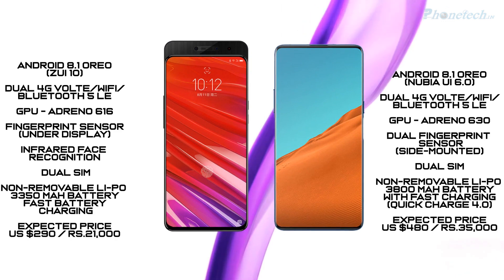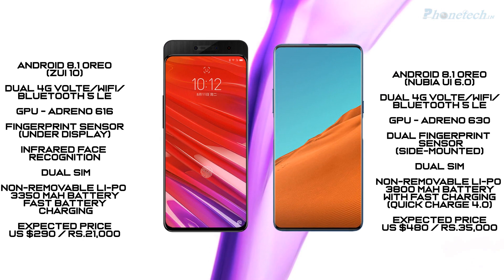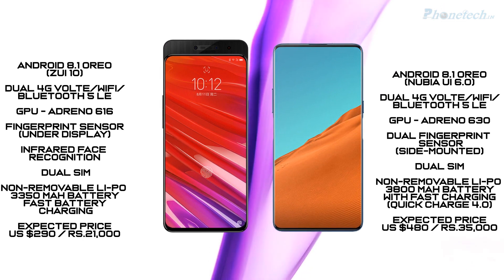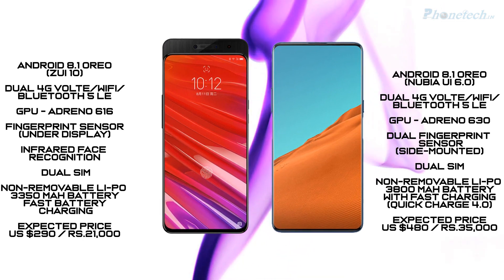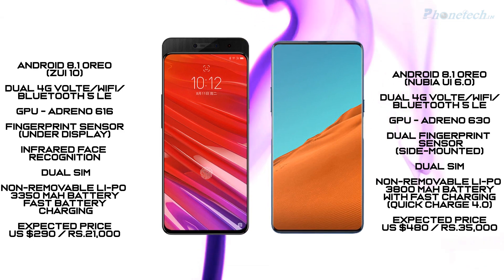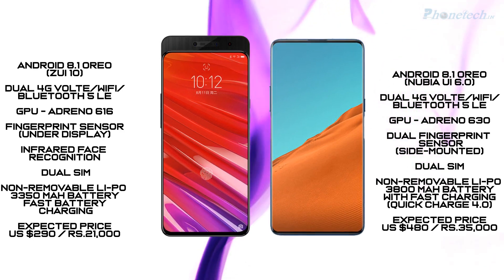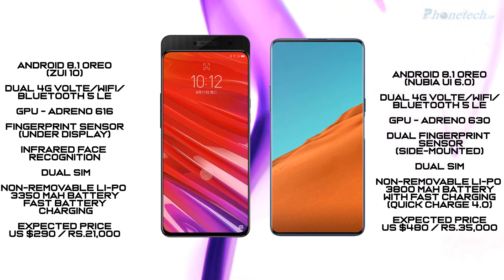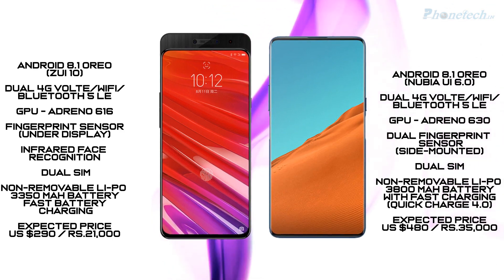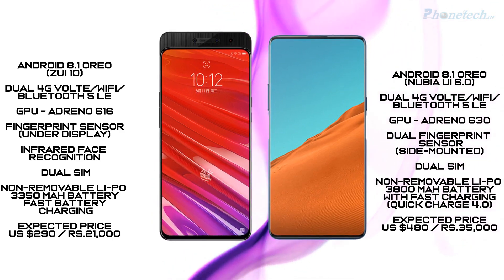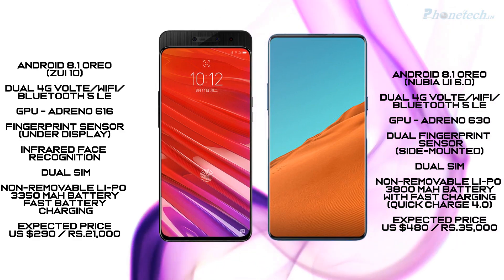Let's look at other specifications. Both have Android 8.1 Oreo and 4G. For the GPU, the Z5 Pro has an Adreno 616, while the Nubia X has the higher Adreno 630. Both have a fingerprint sensor, but the Z5 Pro has an under-display fingerprint sensor, while the Nubia X has a dual fingerprint sensor on the side. Both also support dual SIM.